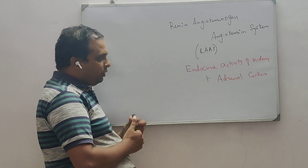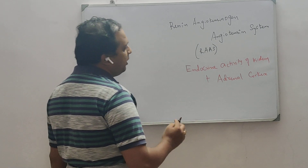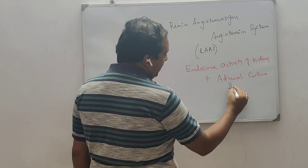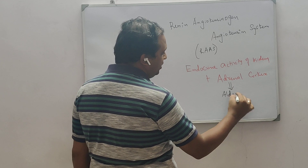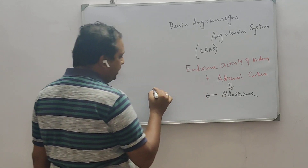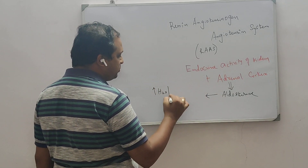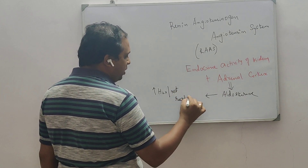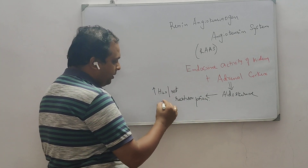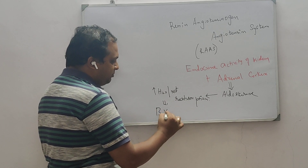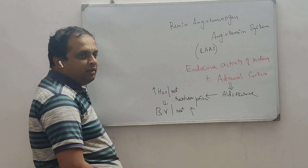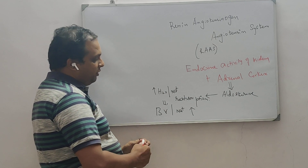Before we move on to the system exactly, we need to know the functions of aldosterone. The adrenal cortex will produce a hormone called aldosterone, which is involved in this pathway. The function of aldosterone is to increase water as well as sodium ion reabsorption, thereby increasing blood volume as well as sodium concentration in blood.